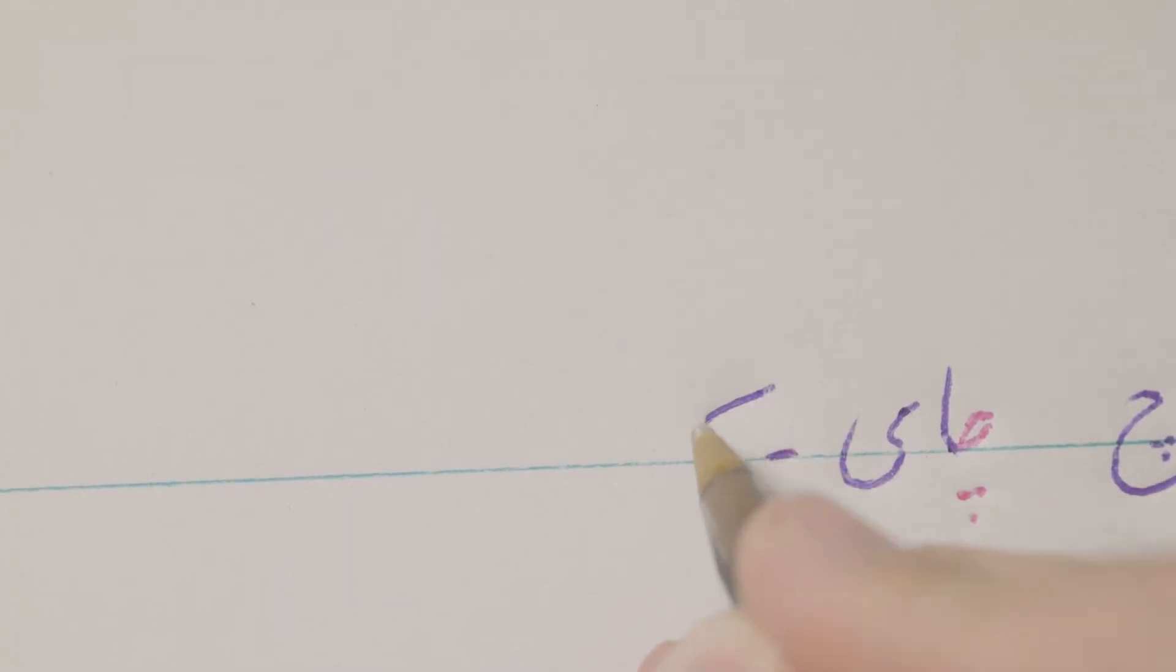When it's in the middle, it's just a flat line, like in 'bacheh' or 'child'. So this flat line in the middle with these three dots is the CH.